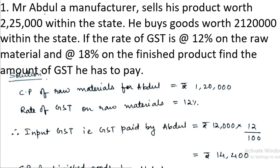Hello students, in this video we will be solving Chapter 1 GST of Class 10, following the OP Malhotra book. Question number one: Mr. Abdul, a manufacturer, sells his product worth Rs. 2,25,000 within the state. He buys goods worth Rs. 1,20,000 within the state. The rate of GST is 12% on raw material and 18% on the finished product. Find the amount of GST he has to pay.